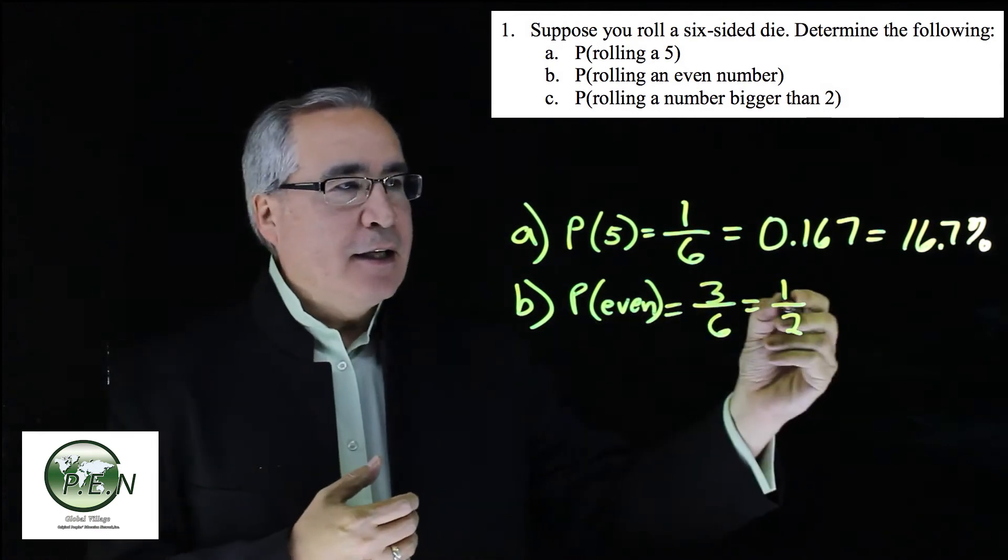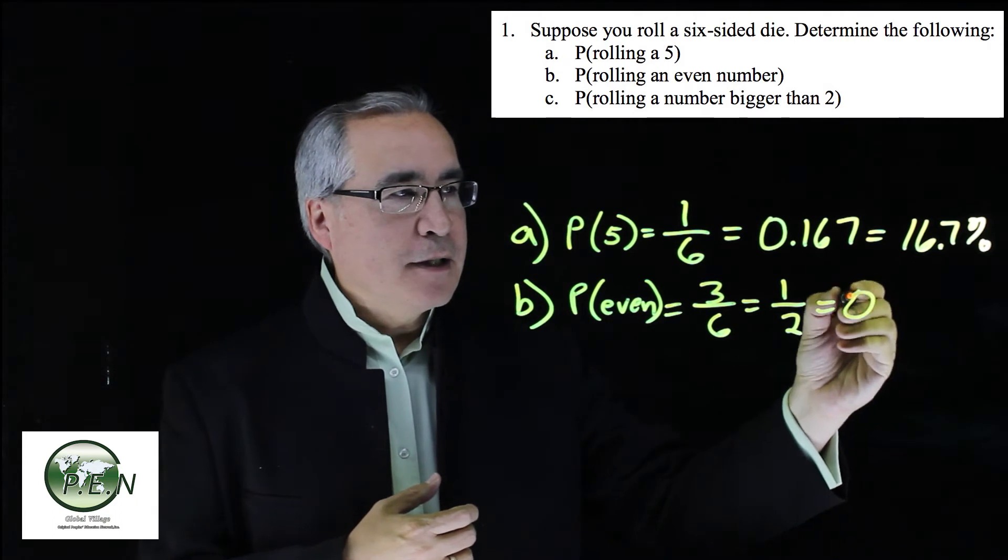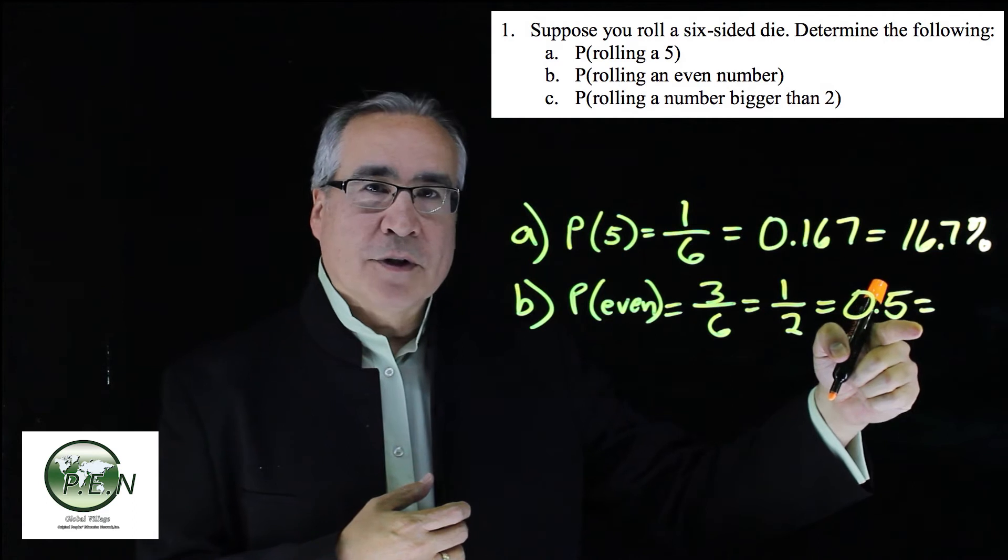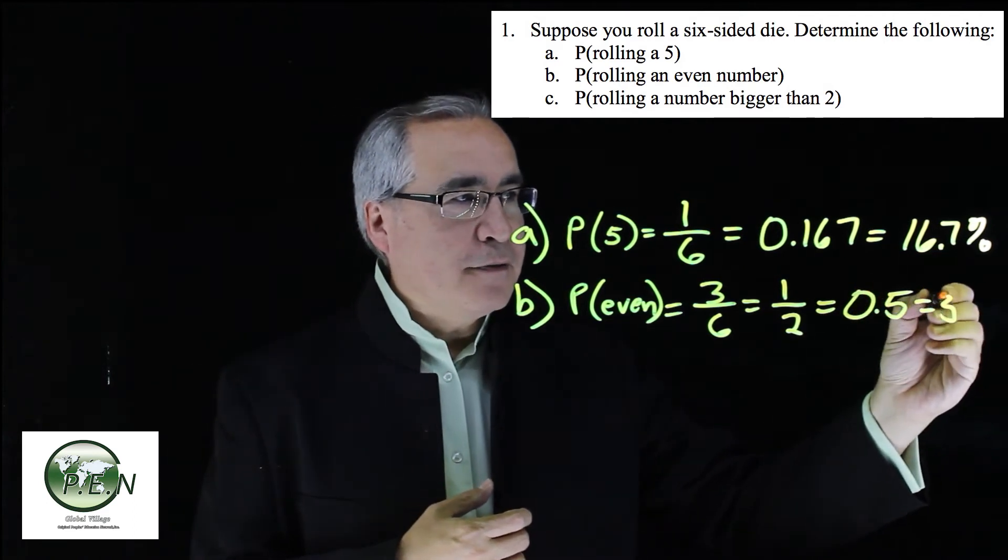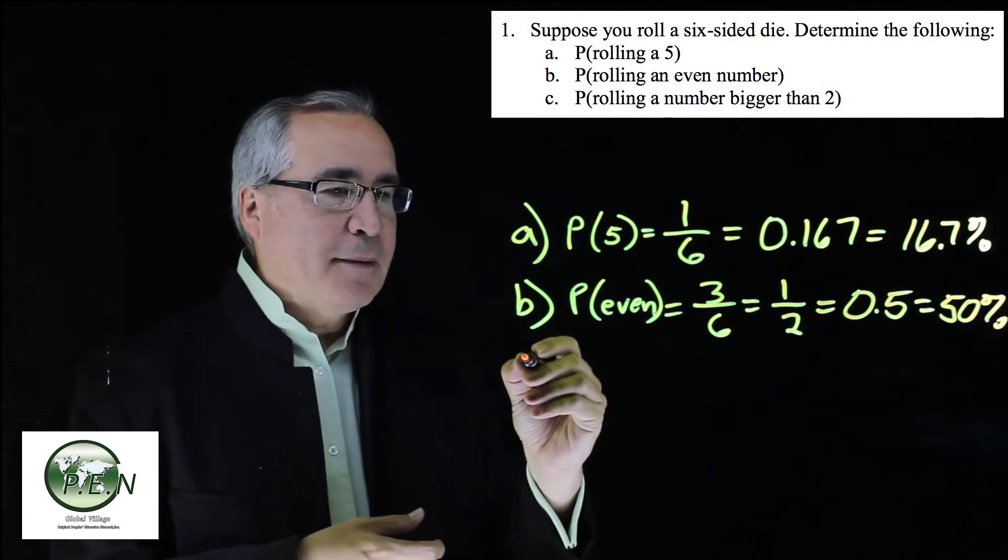Again, I like thinking in terms of percentages. One divided by two, that's 0.5. And multiply by 100, moves it over two places. So we will have a 50% chance. That's our 50-50. Half of happening, half of not happening.